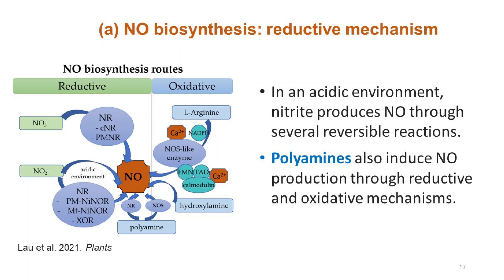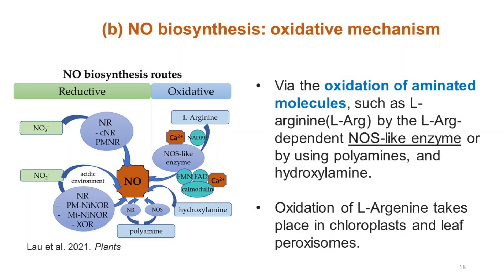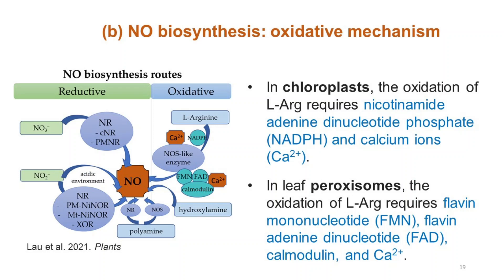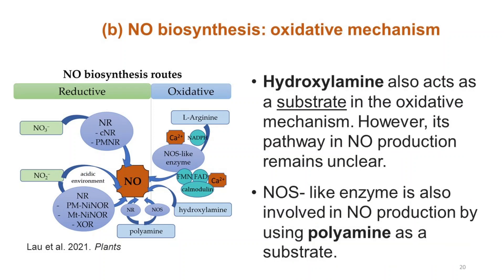Polyamines induce nitric oxide production through reductive and oxidative mechanisms. Oxidation of aminated molecules such as L-arginine by the L-arginine-dependent nitric oxide synthase-like enzyme, or by using polyamines and hydroxylamine, is the second category. Oxidation of L-arginine takes place in chloroplasts and leaf peroxisomes. In chloroplasts, it requires NADPH and calcium ions, whereas in leaf peroxisomes it requires flavin mononucleotide, flavin adenine dinucleotide, calmodulin, and calcium ions. Hydroxylamine also acts as a substrate in the oxidative mechanism; however, its pathway in nitric oxide production remains unclear. Nitric oxide synthase-like enzyme is also involved in nitric oxide production using polyamine as a substrate.